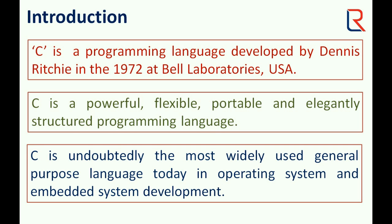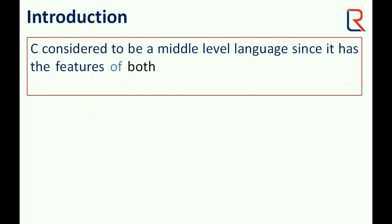C is undoubtedly the most widely used general purpose language today in operating system and embedded system development. C is considered to be a middle level language since it has the features of both the low level and the high level languages.